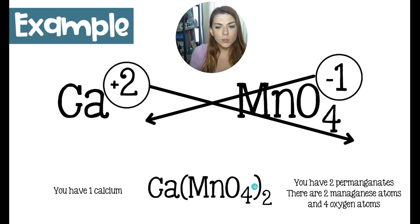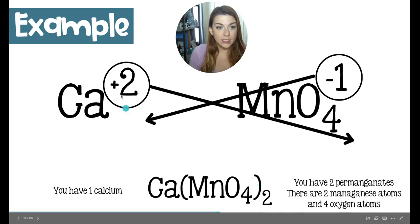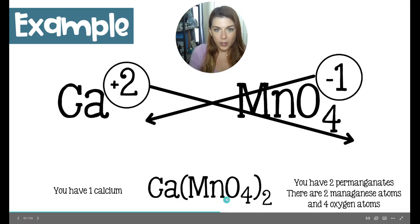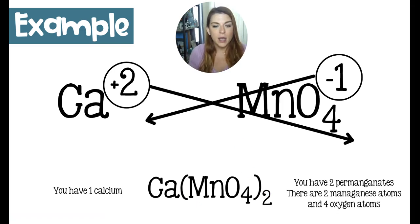Now, the reason we have to wrap this in parentheses when the two comes all the way across is because if we didn't, number one, it would look like we had one calcium, one manganese and 42 oxygens, which would be crazy. But it also helps us to indicate that we don't just have two oxygens. We have two of the permanganate ions, that polyatomic ion.